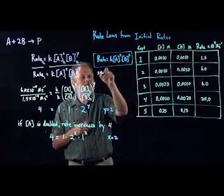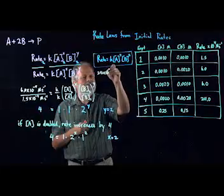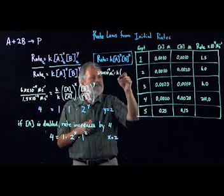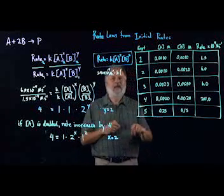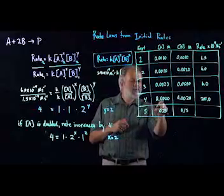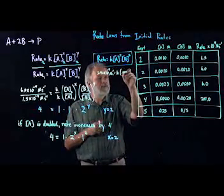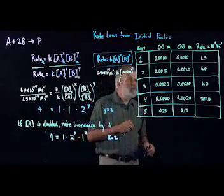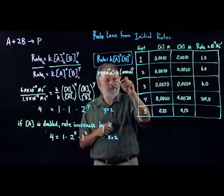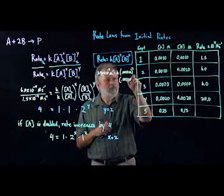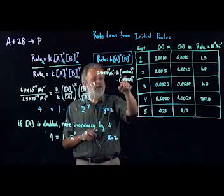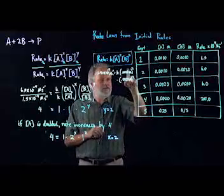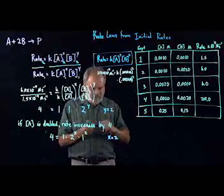So 24 times 10 to the minus 4 molar per second is equal to k times, A for experiment 4 is .002 and B is also .0020 molar squared. When you actually solve this, you get .002 molar squared, .002 squared and molar squared, divide both sides, and you should get k equals 1.5 times 10 to the 8th.